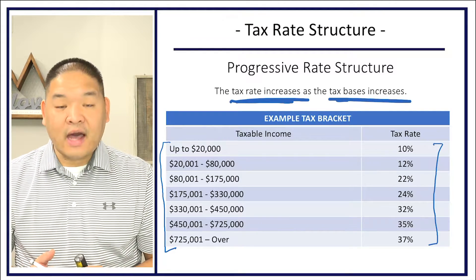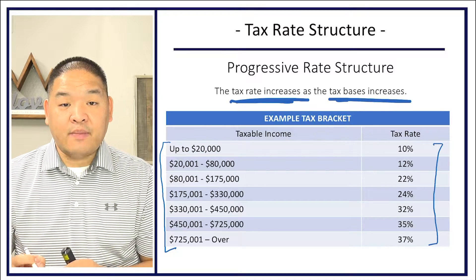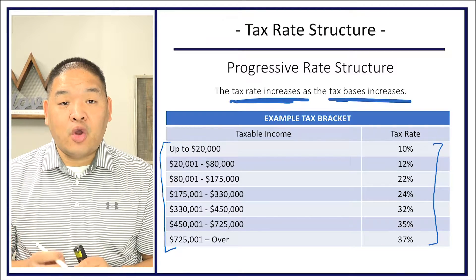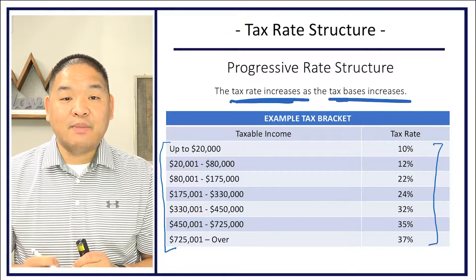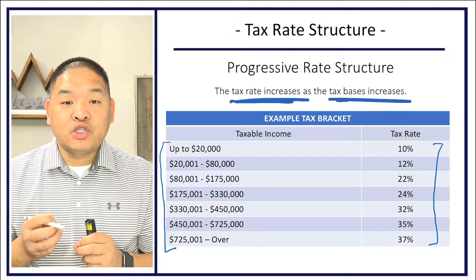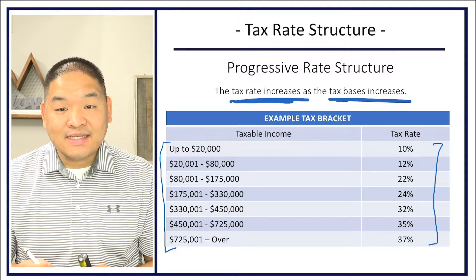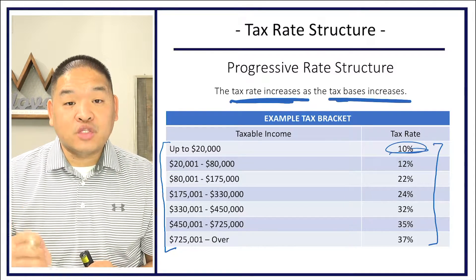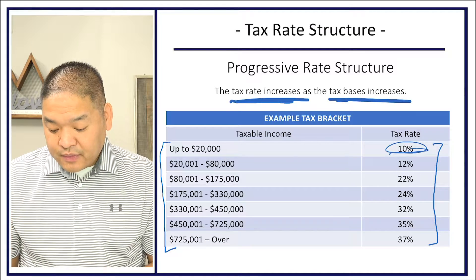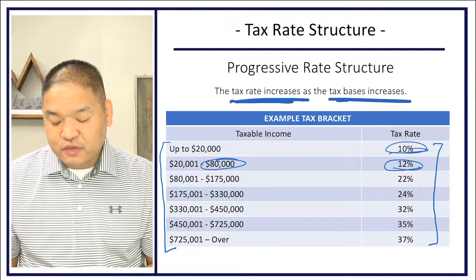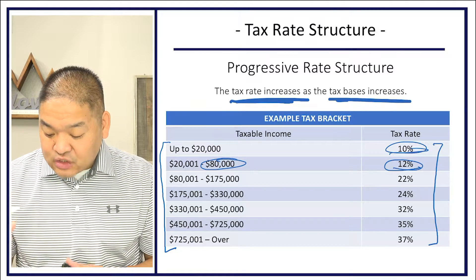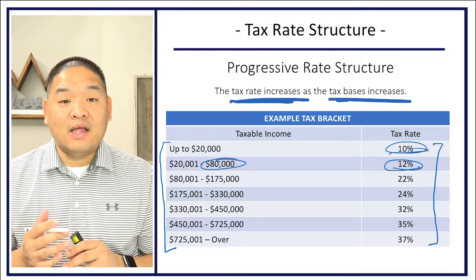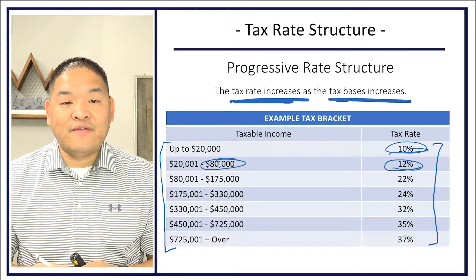It's important to know that that 12% is only on the amount over $20,000 up to $80,000, which means your first $20,000 is still taxed at the 10% rate. It's just the amount that goes over $20,000 up to $80,000 that is taxed at 12%. Then when we move into the 22% bracket, it's only the amount over $80,000 up to $175,000, and so on.